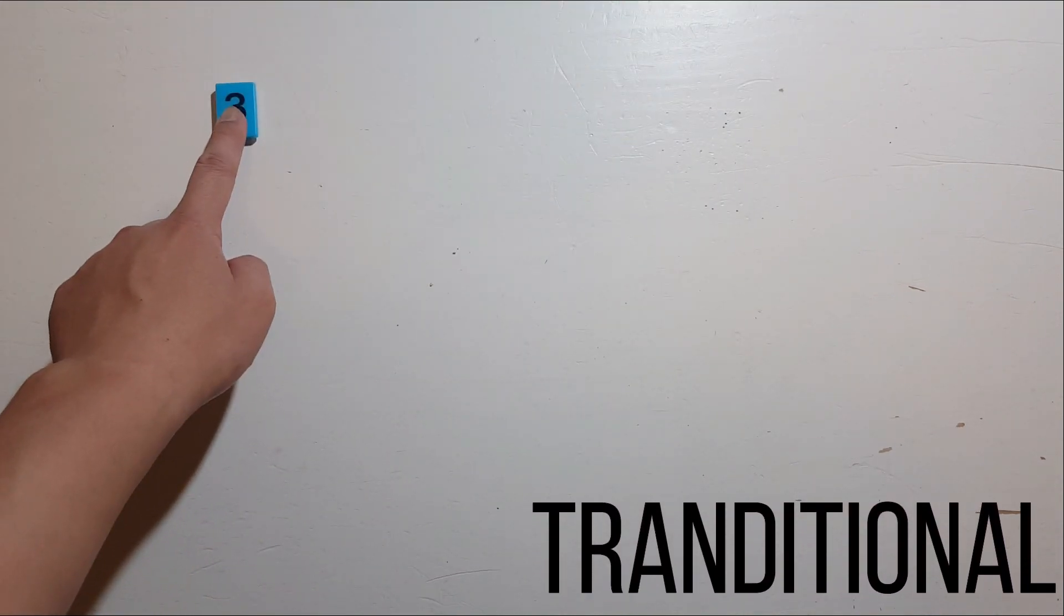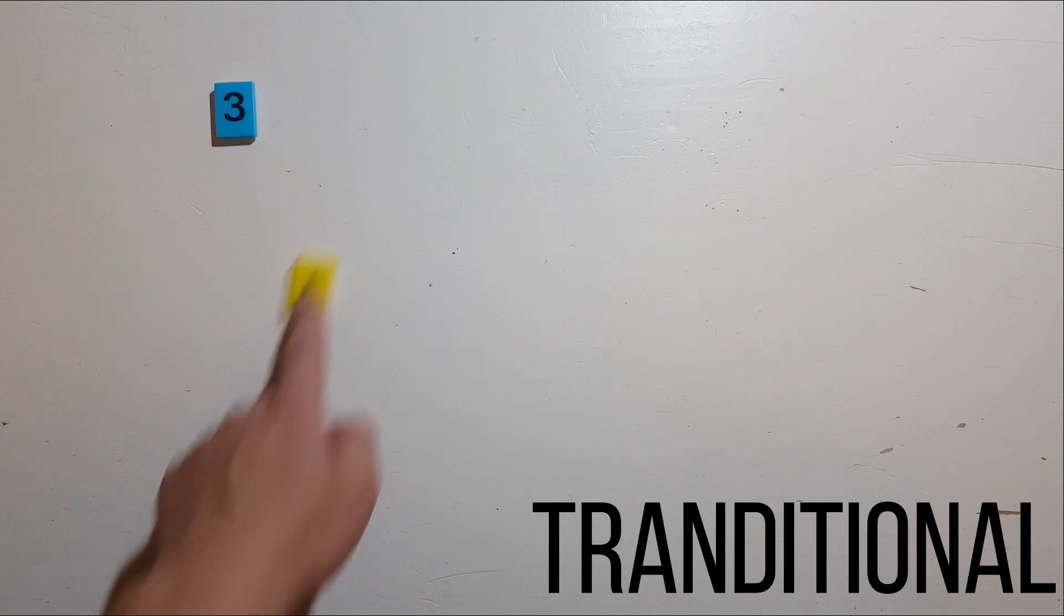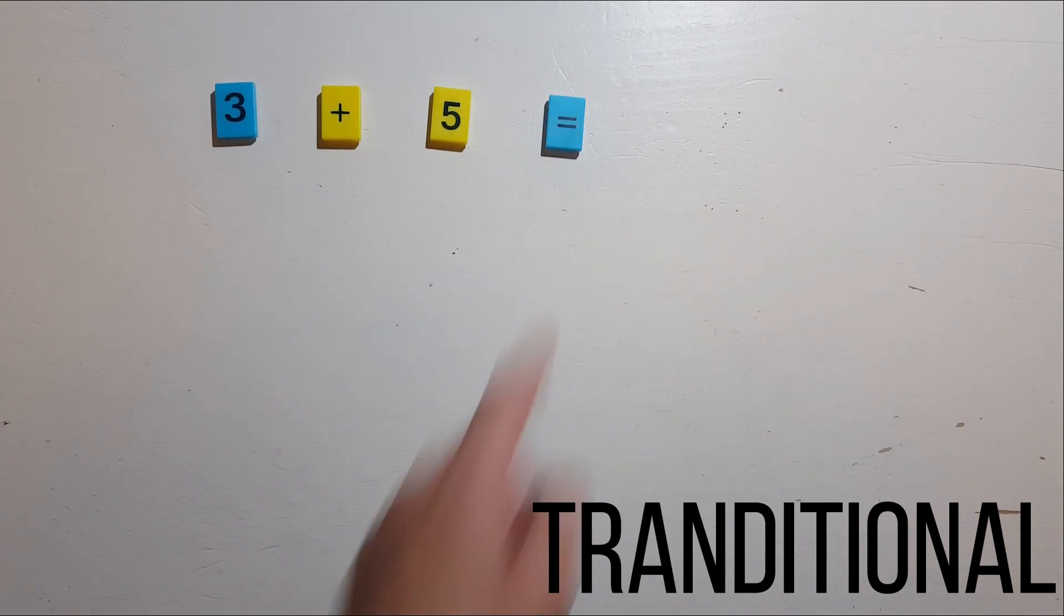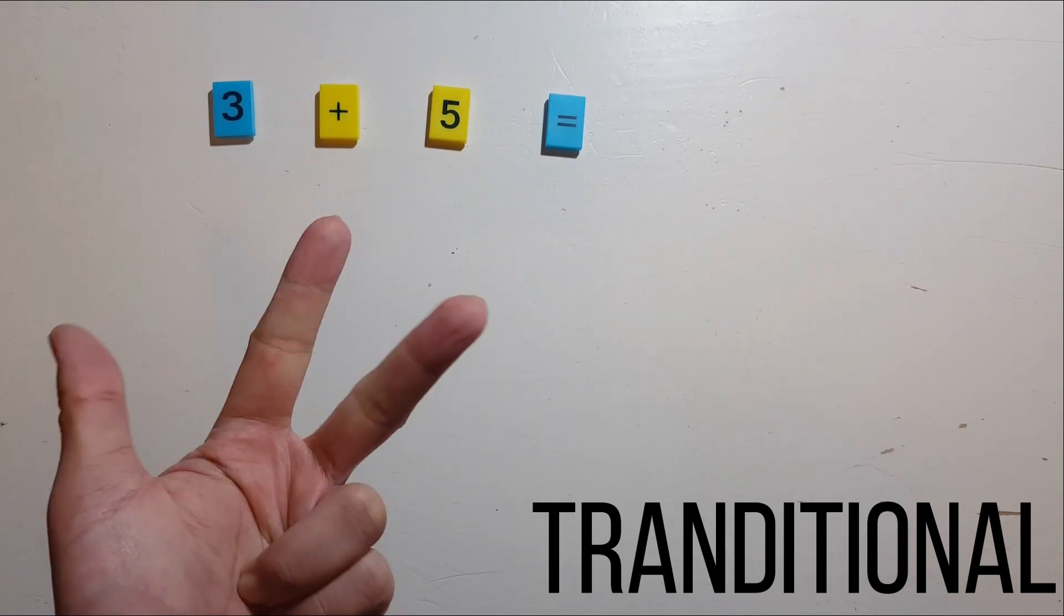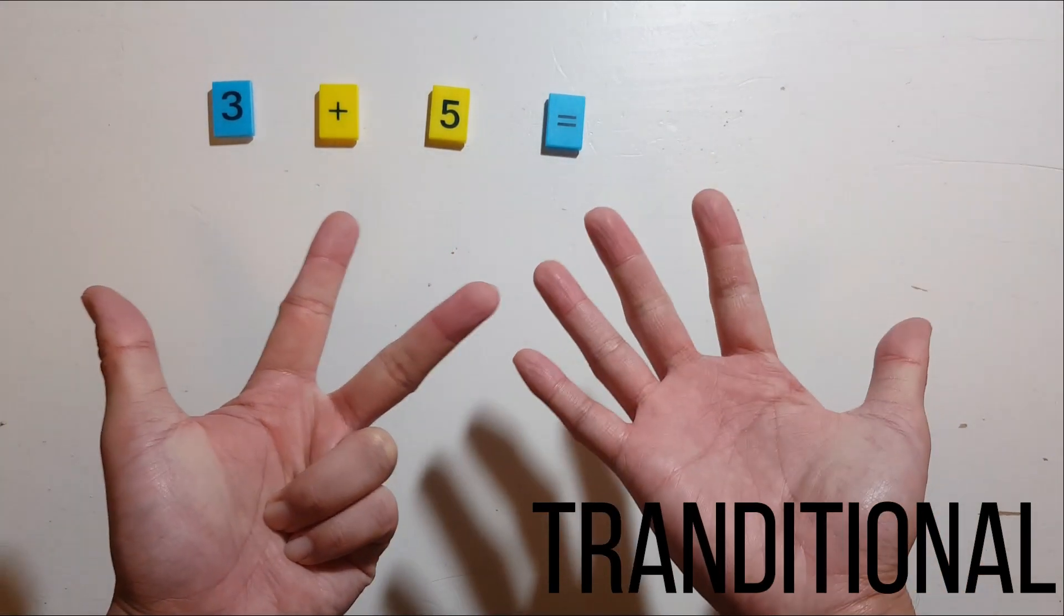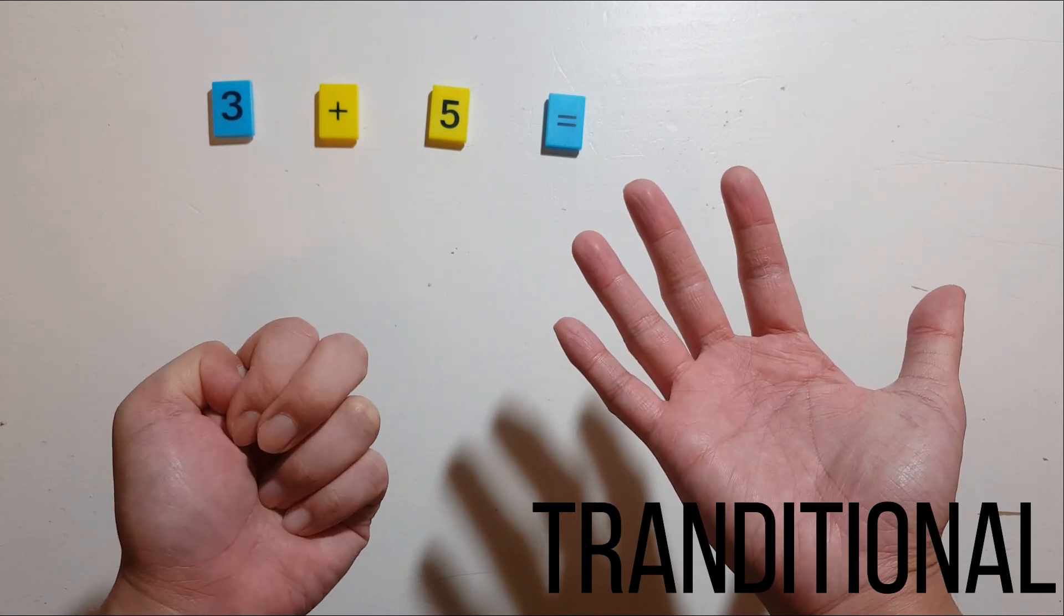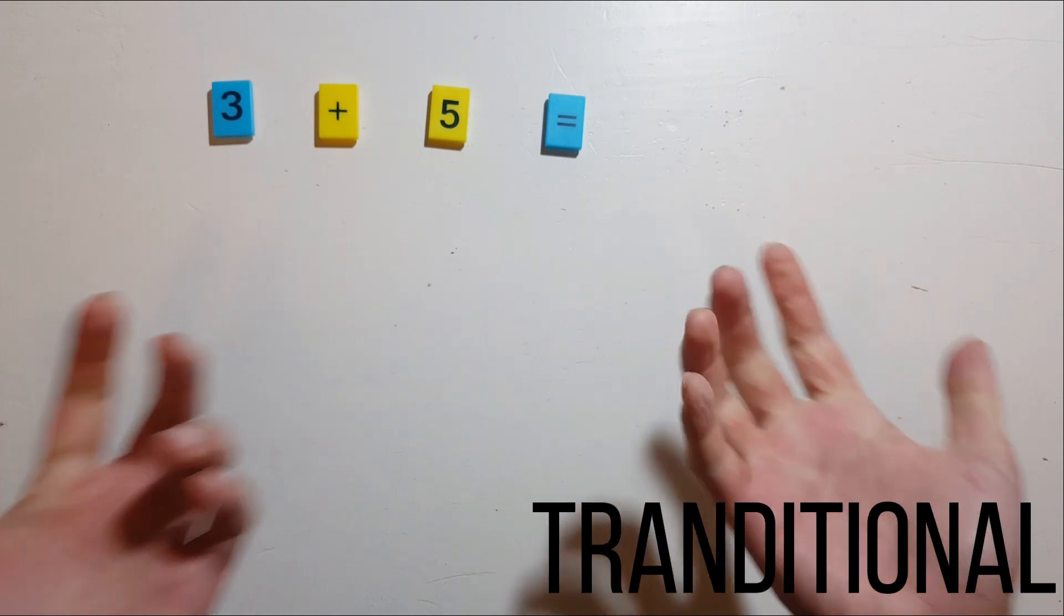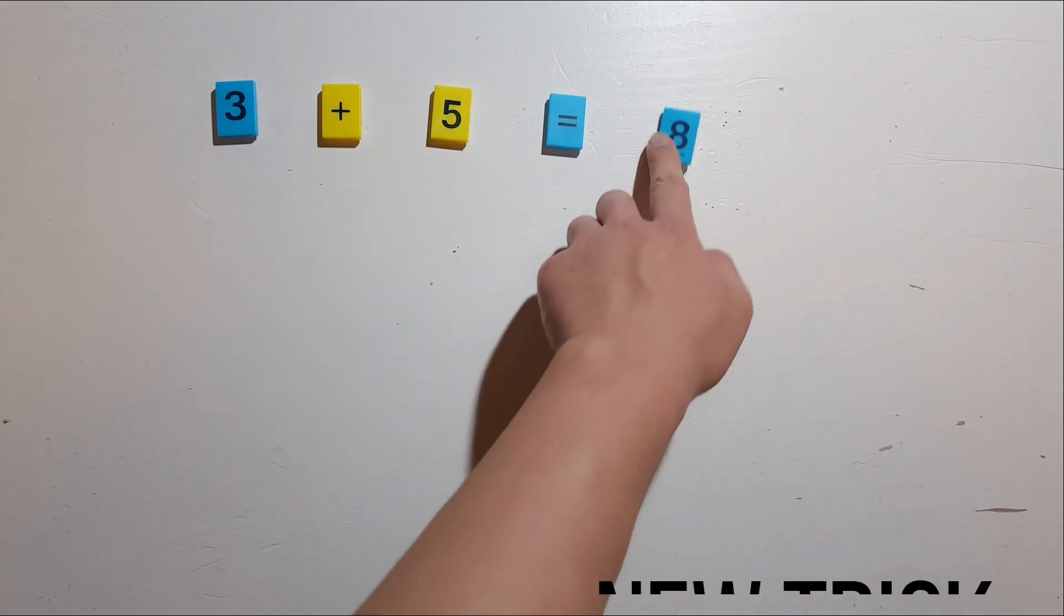First, we start with a simple question: 3 plus 5, the traditional way. We get one hand with 3 fingers up, another hand with 5 fingers up. Then we count them all one by one: 1, 2, 3, 4, 5, 6, 7, 8. So the answer of 3 plus 5 is 8.